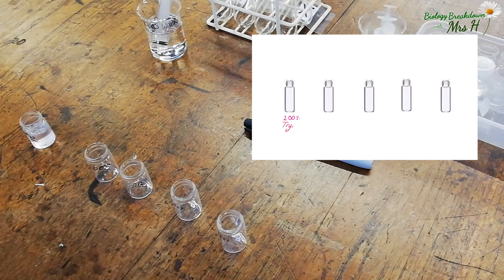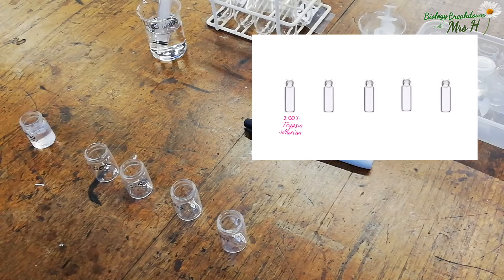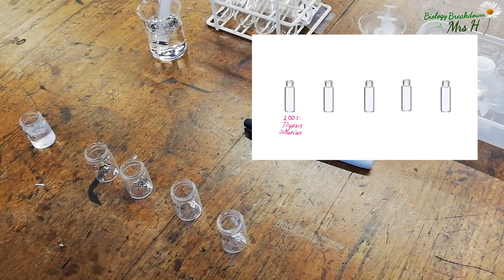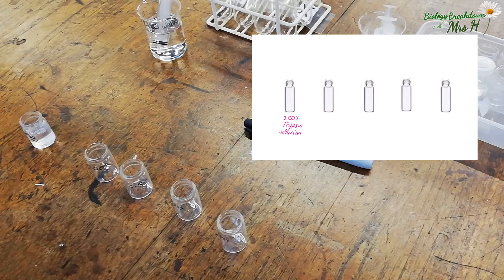We're provided with a 2% trypsin solution with which we need to make a serial dilution. Now these small glass bottles are ideal for serial dilution because they are short and you can easily get a syringe into them.